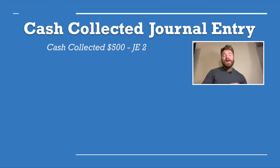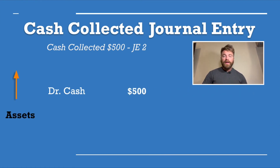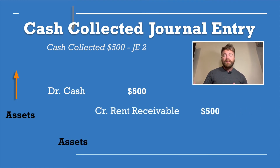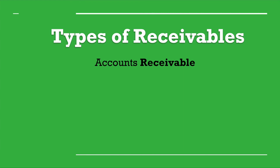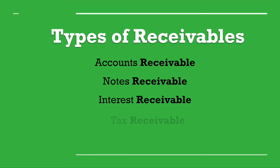After that, we make another journal entry showing a debit to the cash we received for $500, and then crediting the rent receivable, removing that $500 to be received because they finally paid you. The cool part is that this applies to all types of receivables: accounts receivable, notes receivable, interest receivable, tax receivable, and more.